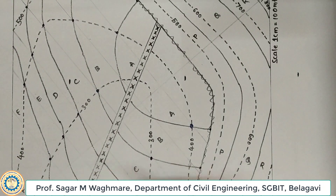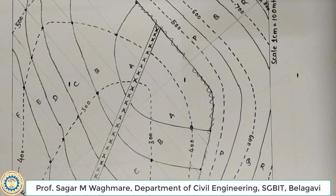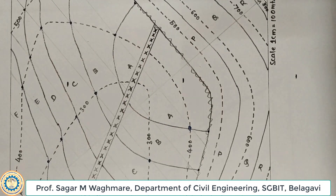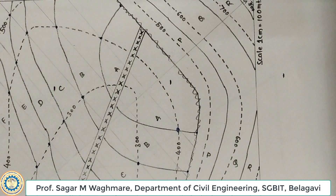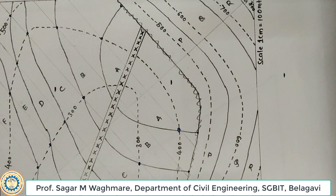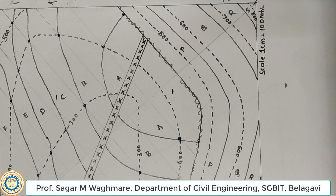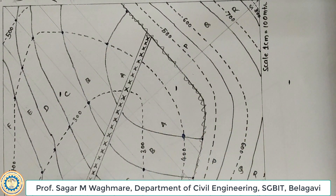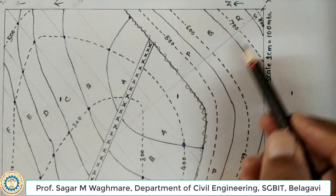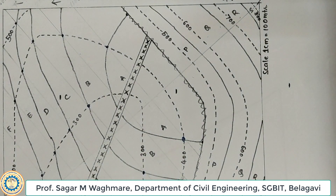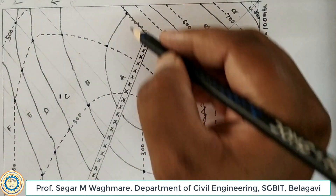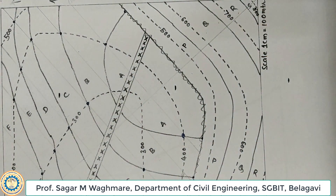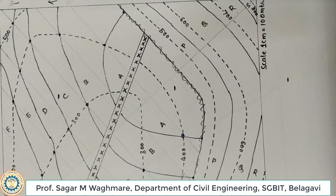Here there are a few geological features which we need to understand before we proceed. The first geological feature is that in this map there is an unconformity. What is the unconformity? Unconformity is nothing but the gap between two formations. We have two formations: A, B, C, D, E and another formation PQRS. These two formations are totally apart from each other, separated by the line of unconformity, which I made as a zigzag line.